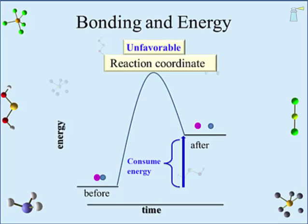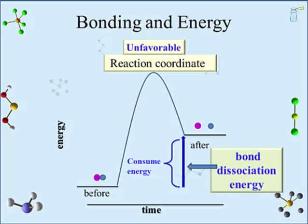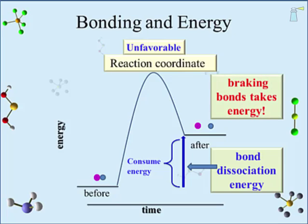Reactions that consume energy are referred to as unfavorable and are not likely to occur on their own. Unfavorable says nothing about the speed of the reaction. Importantly, the energy consumed in breaking a bond is called the bond dissociation energy. Breaking bonds takes energy, and as we just saw, making bonds releases energy.